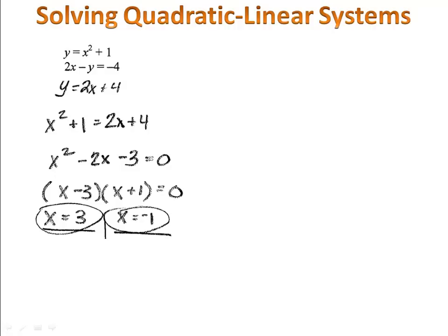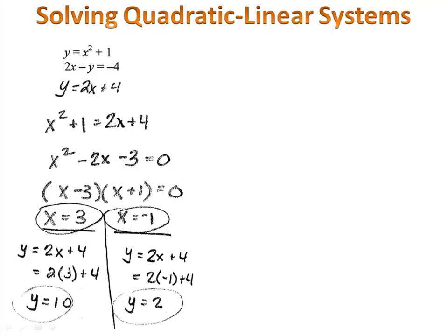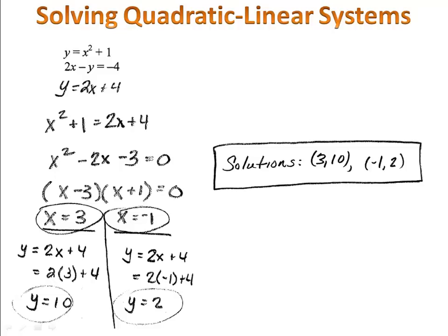Then we solve the system and we get x = 3 and x = -1. Next, we know we have to find the y coordinate that goes with those, and we plug it into the equation y = 2x + 4. We get y = 10 and y = 2. That means our solutions are the point (3, 10) and (-1, 2).